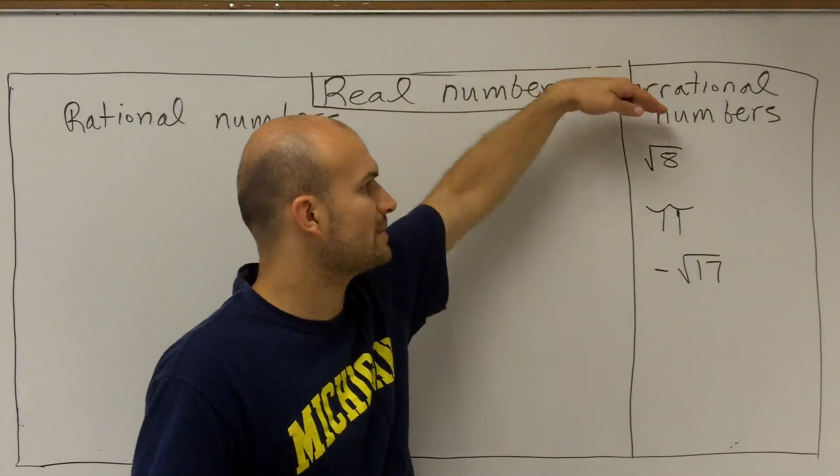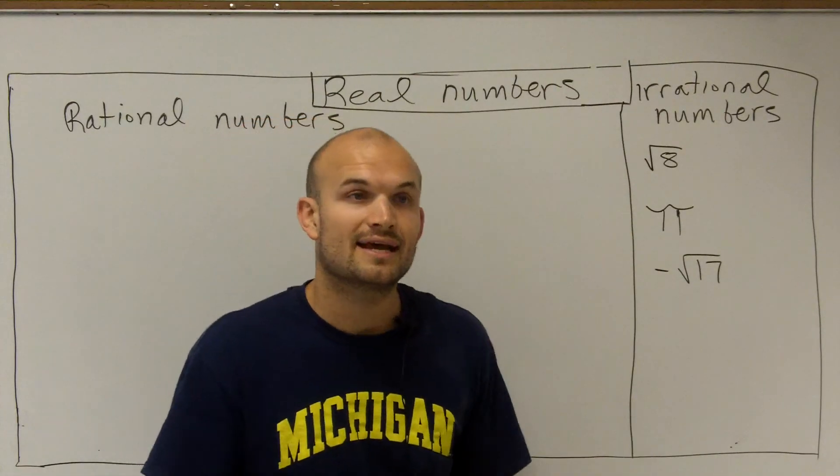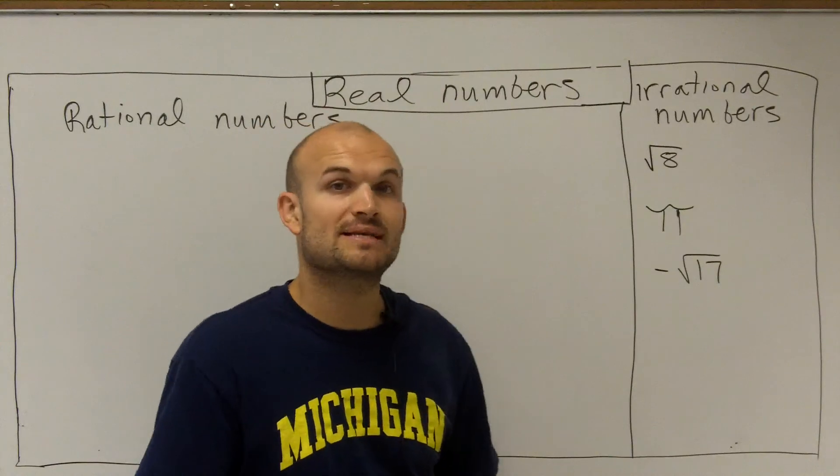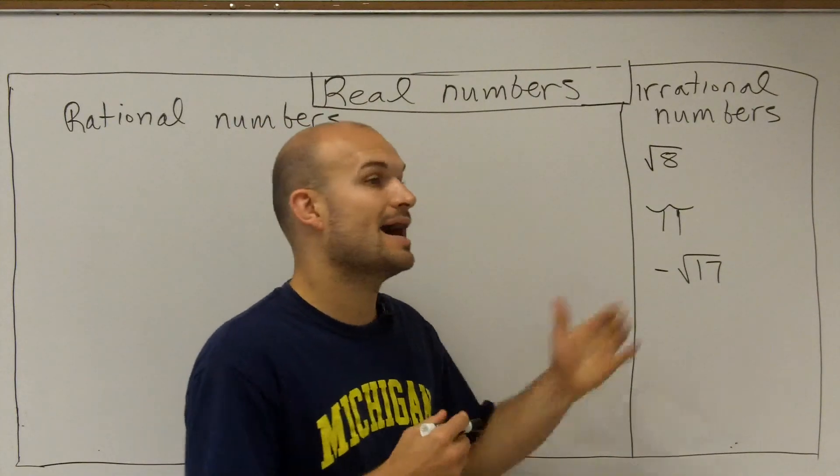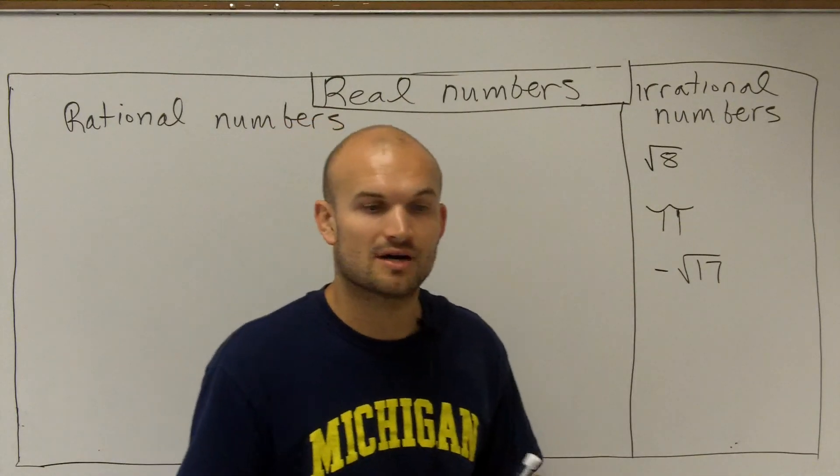But for right now, if you can just remember, irrational numbers are numbers that we're not going to be able to write in a fractional form and that are going to be non-repeating, going on and on and on forever. So there you go. There's a couple examples of irrational numbers.